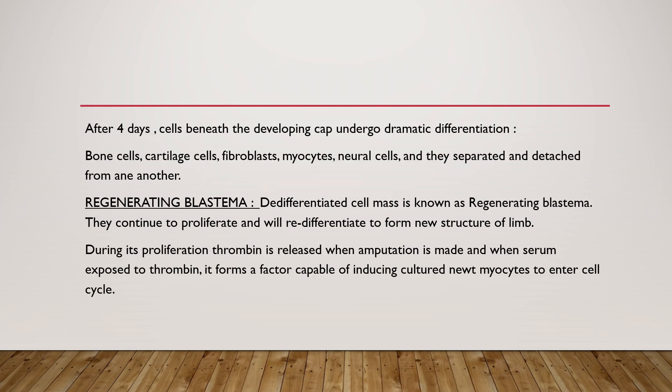After 4 days of apical ectodermal cap formation, cells beneath the developing cap undergo dramatic de-differentiation, which leads to the formation of various structures such as bone cells, cartilaginous cells, fibroblasts, myocytes, and neural cells. These cells separate and detach from one another. This de-differentiated cell mass is known as the regenerating blastema, meaning it has lost its specialized form and become undifferentiated.